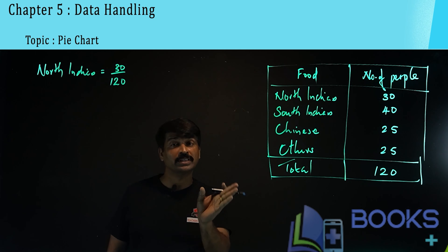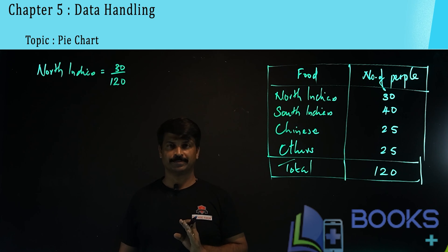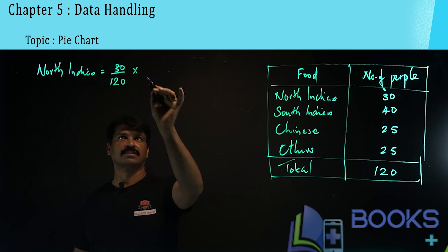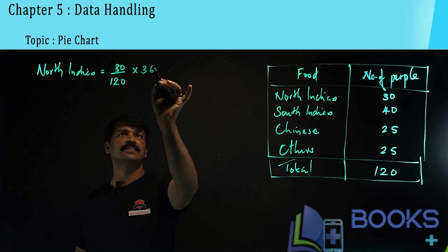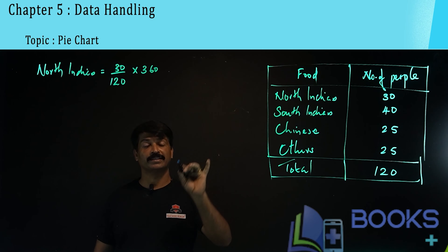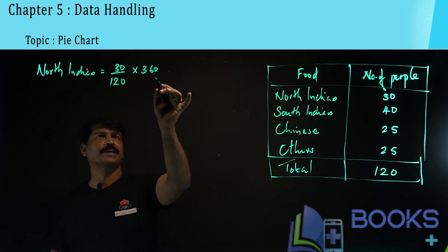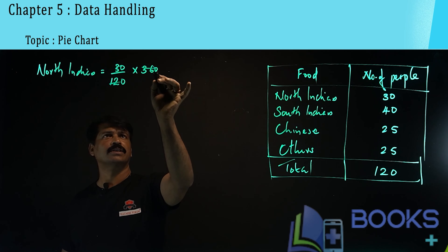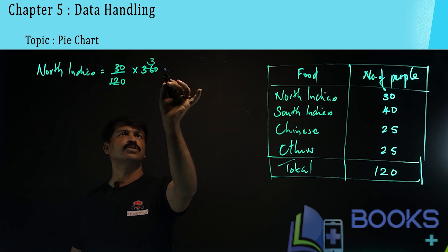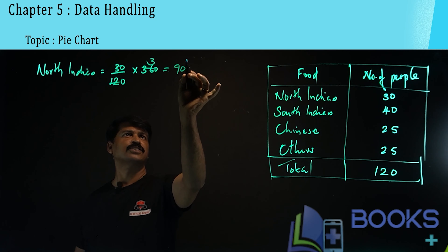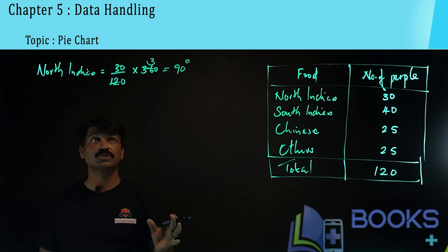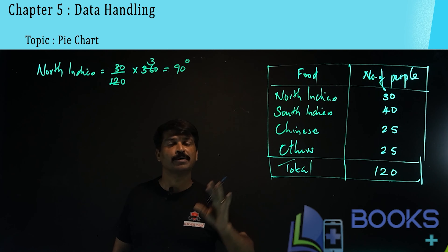Before converting into a pie chart, we should assign the degree measure for each item. North Indian food is liked by 30 out of 120 people, so the fraction is 30/120. To convert into degree measure, multiply by 360 degrees: 30/120 × 360 = 90 degrees. So North Indian food corresponds to 90 degrees in the pie chart.